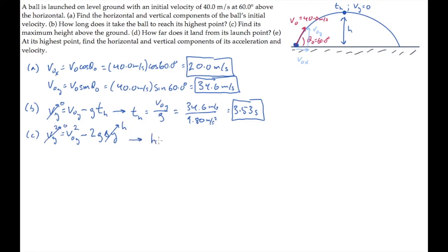It equals the square of the initial y component of velocity divided by 2G. So, when you calculate this, you find it equals 61.1 meters.